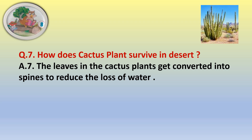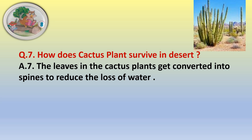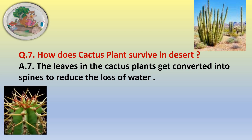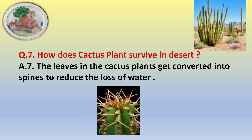Question number seven: how does the cactus plant survive in the desert? The leaves in the cactus plants get converted into spines to reduce the loss of water. In this way, they can survive in the desert.